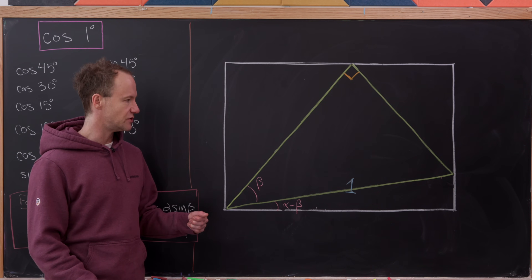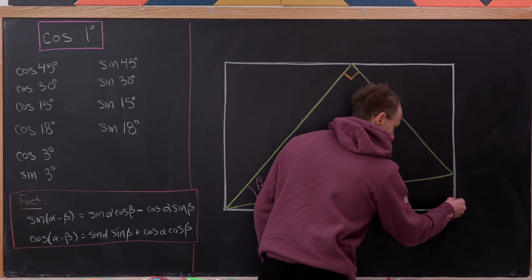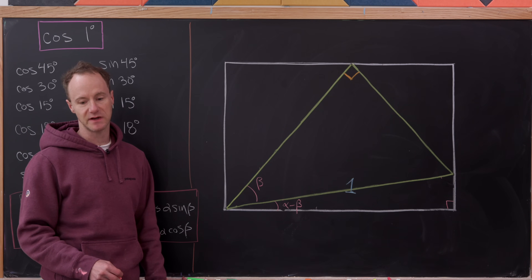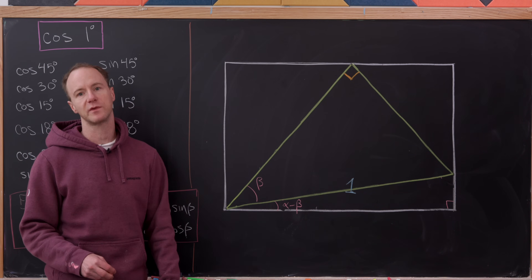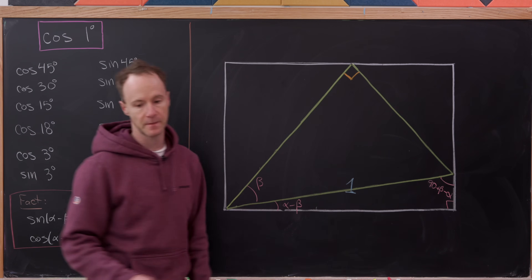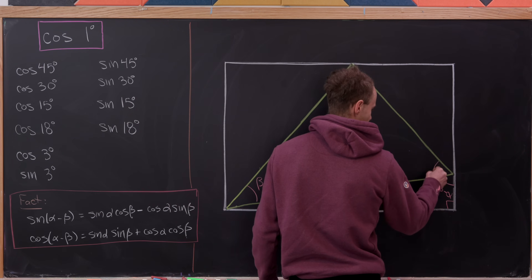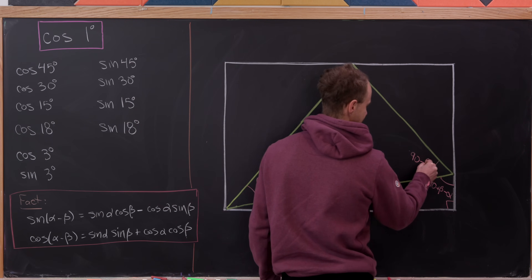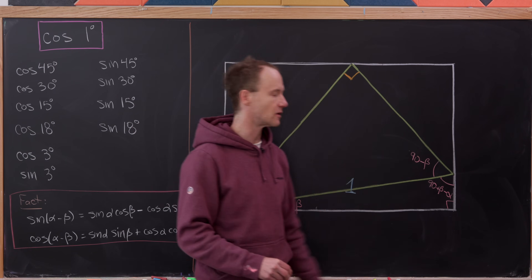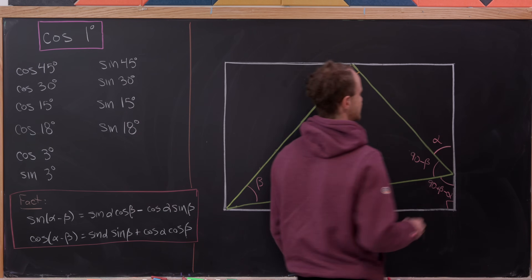Now I'd like to chase some angles and label all of the angles inside of this picture. Since we've got a rectangle, this right here is a 90 degree angle. Then 90 plus alpha minus beta must equal 180 by the sum angle formula for triangles, making this angle 90 plus beta minus alpha. This is beta right here, and this is 90, so that makes this angle 90 minus beta.